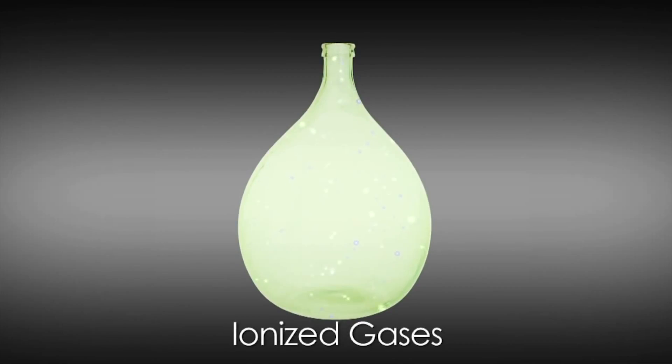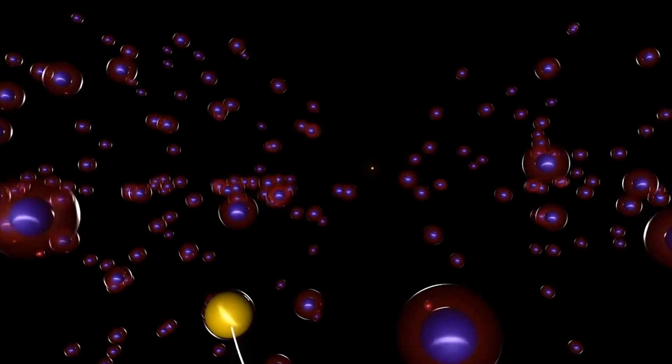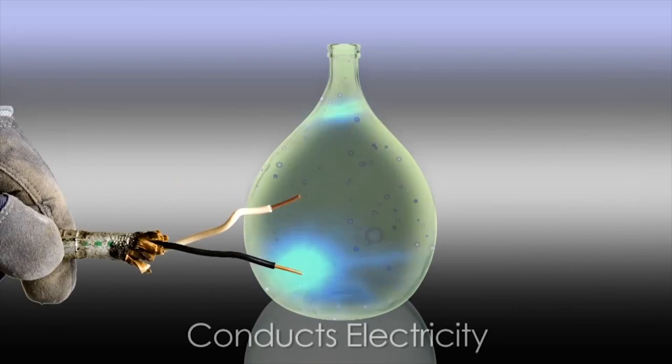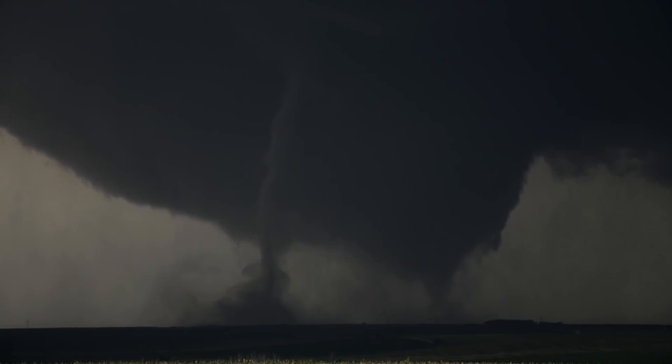An ionized gas consisting of positive ions, free electrons and neutral particles. If this happens, the gas becomes electrically conductive and current can flow. In nature, plasma can be seen in the form of lightning.